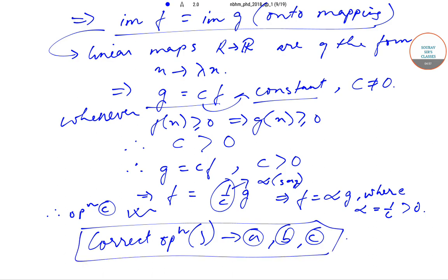The correct options in this question are option A, option B, and option C — all three are correct. Today we solved an algebra question from the NBHM 2018 paper. We'll be solving the next questions in subsequent videos. Till then, keep watching Softest Classes videos for more solutions and content. Thank you very much.